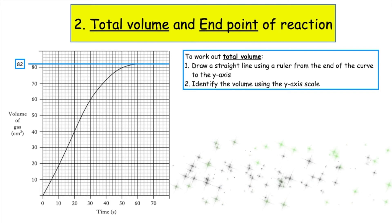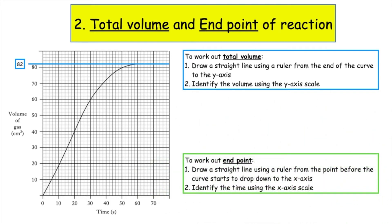Once you've worked out the total volume, you can work out the end point of the reaction. Read the graph backwards — from end to start. From the straight line used to find the total volume, find the first point where the graph starts to level off and draw a line from there down to the x-axis. Using the x-axis scale, there are 5 boxes between each value, so each box is worth 2, giving an end point of 58 seconds.